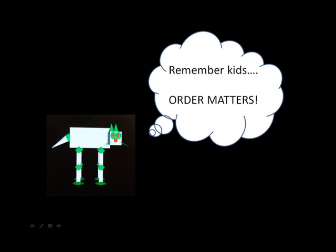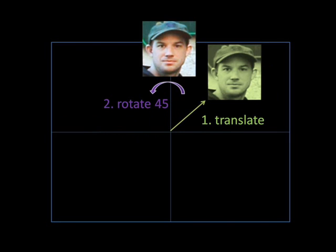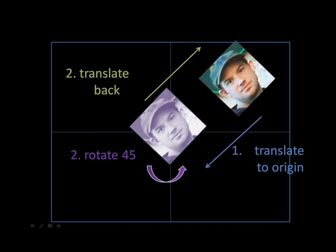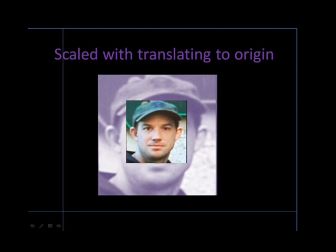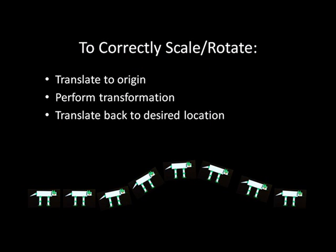Now it's important to remember that in transformations, order matters. For example, if we first translate our object and then rotate it about the origin we get this image, but if we first rotate and then translate we get a different image. Clearly this shows that in some transformations order matters. In the case you want to rotate an object about itself, make sure to translate to the origin, rotate the object, and translate it back again. A similar situation occurs when scaling an object. To rotate an object about itself or correctly scale an object, you must translate to the origin, perform your transformation, and then translate back to the desired location.